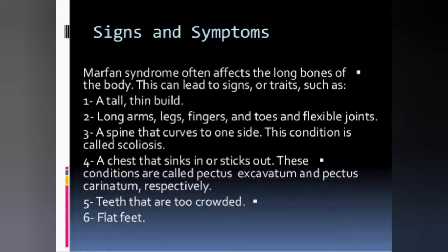Marfan syndrome generally affects the long bones of the body, such as the femur. Signs include being very tall and thin, with long arms, legs, fingers, and toes. Joints are flexible, and the spine curves to one side — this condition is called scoliosis.